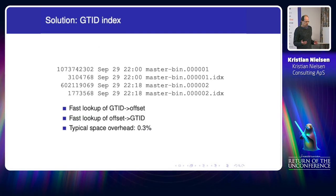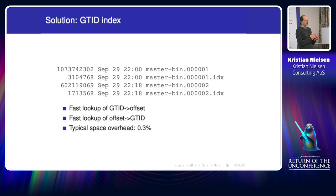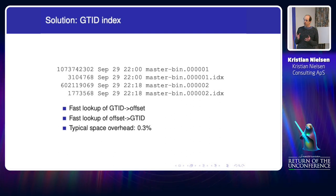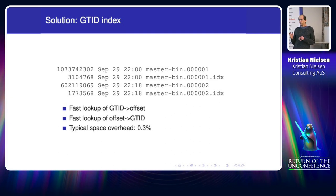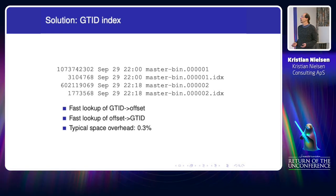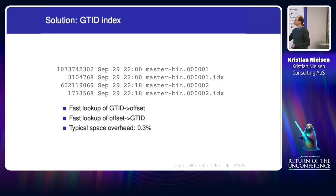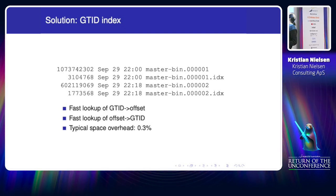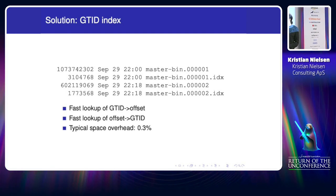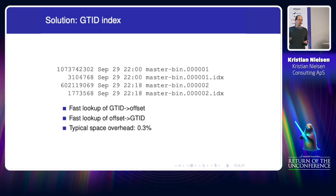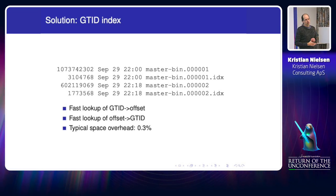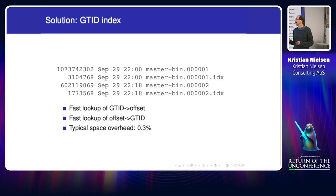The solution is: we don't want to scan the binlog serially, so we create an index that allows us to quickly look up a GTID position and find the corresponding place in the binlog to start. Looking at my current implementation, the normal binlog files get an extra index file written alongside them, and it's quite small — typically around 0.3% of the binlog size.